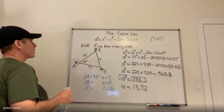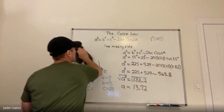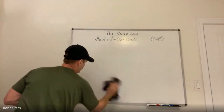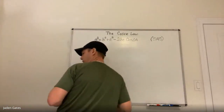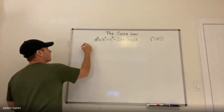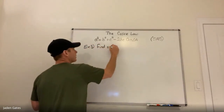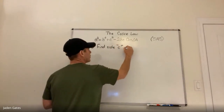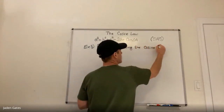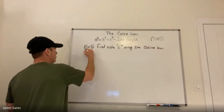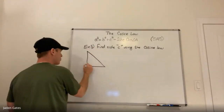Our last example. Example three: we're going to find side C using the cosine law. It's going to show you something interesting. Here's my triangle — in fact I'm going to make it a right triangle.